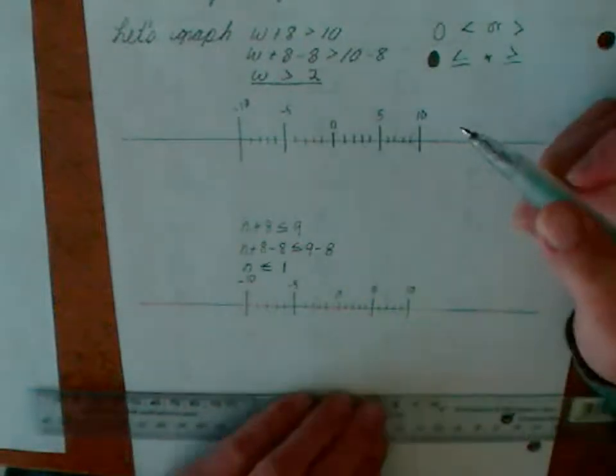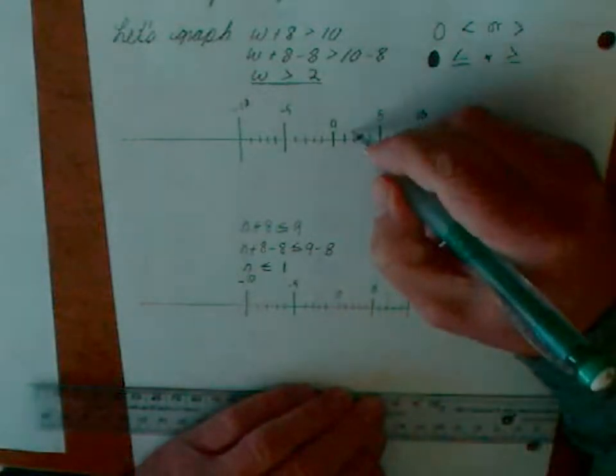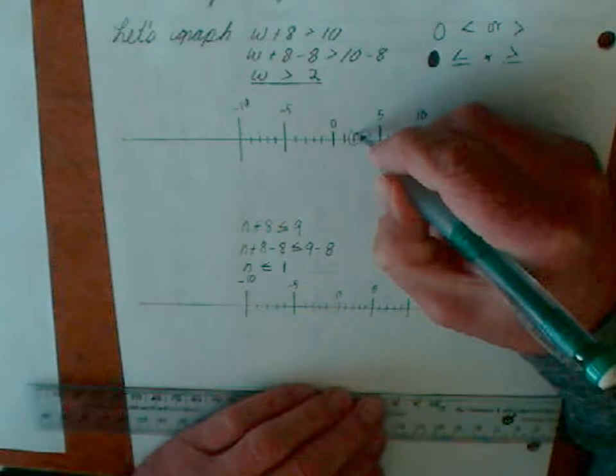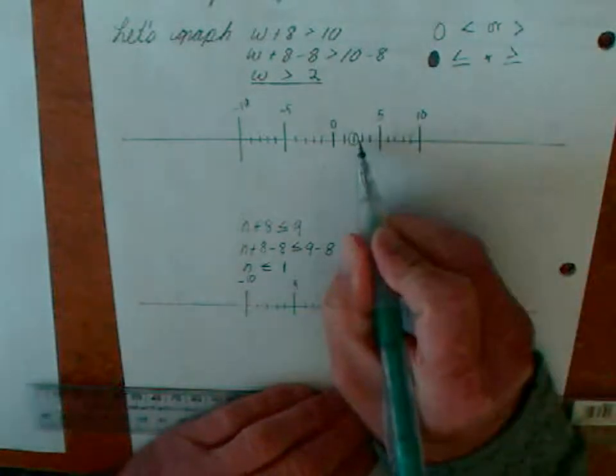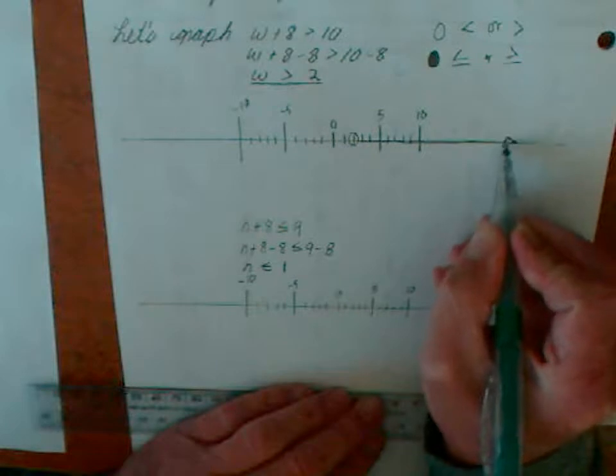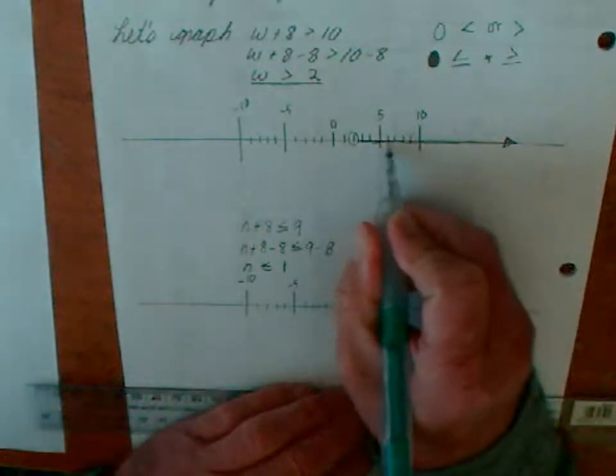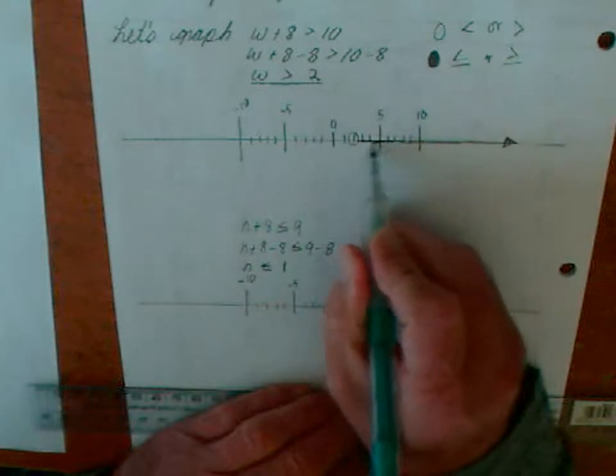So W greater than 2, so that means we find 2 on our number line. And we put an open circle. And we're just going to put an arrow all the way out. Because the solution could be anything as long as it's greater than 2.